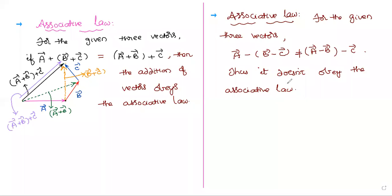So here, once you cross-check all the three laws — all three laws are valid in addition. Only the last law, the distributive law, is obeyed by the subtraction of vectors. The remaining commutative and associative laws are both not valid in subtraction of vectors.